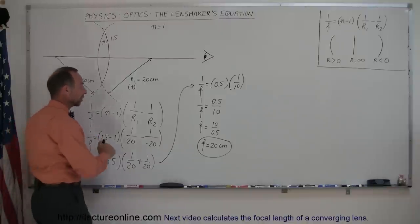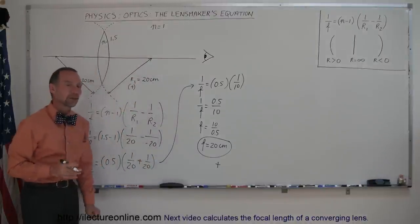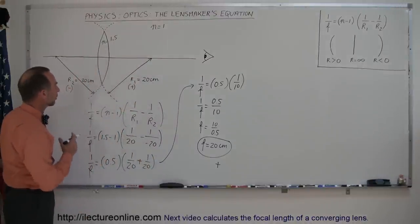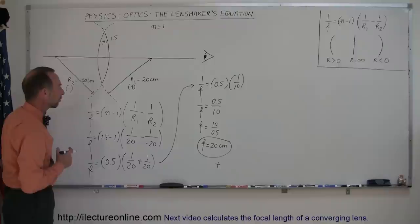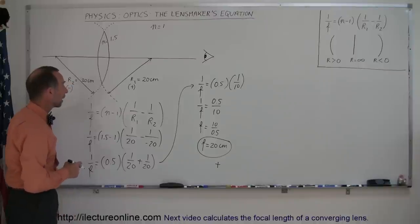So this is a converging lens. It's a positive focal length that makes this a converging lens. And by now, I think we are pretty familiar with that kind of shape lens being converging lens. I'll do some more examples of different shaped lenses to see how we find the focal length of different kinds of lenses.